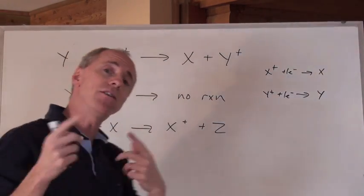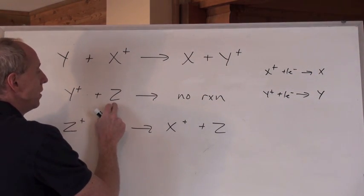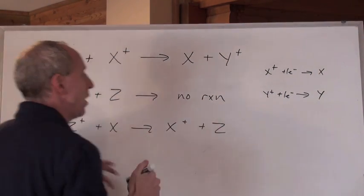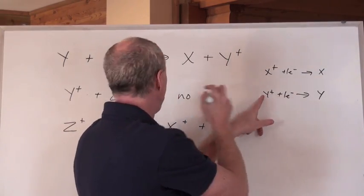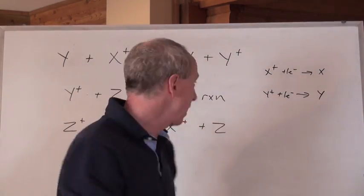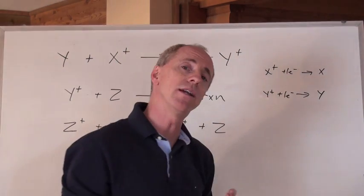Now you're told that Y positive and Z don't have a reaction. So if Y positive is here and it doesn't react with Z metal, then Z metal is either here or here. I'm not sure where it is.